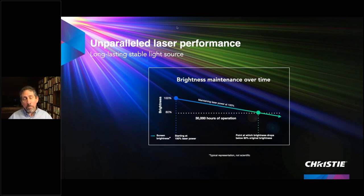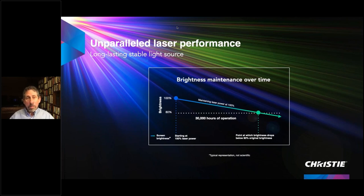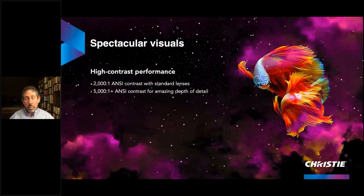One key advantage of an RGB laser system is stability over time. Unlike a lamp that degrades in hundreds of hours, lasers last tens of thousands of hours — a very slow degradation curve. Because we're not using a phosphor that can degrade, the pure RGB system maintains its color space over a very long period. We have confidence in 30,000 hours at 80% brightness, with some systems running 35,000–40,000 hours.